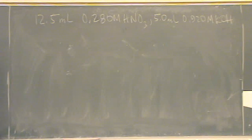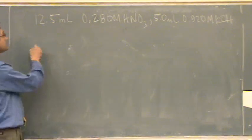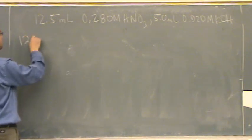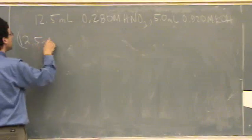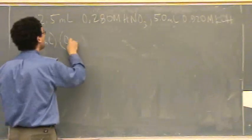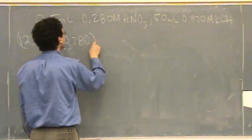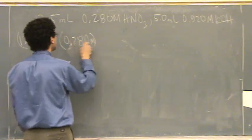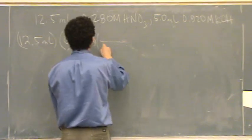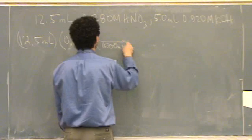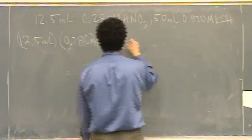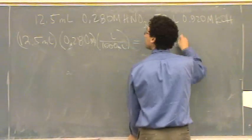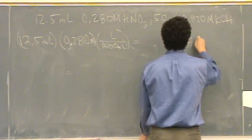Titrations are essentially limiting reactant problems. So you would just go, 12.5 milliliters times 0.280 molar. And since molar is in liters, you can say 1,000 milliliters per liter. And then you should get moles of HNO3.